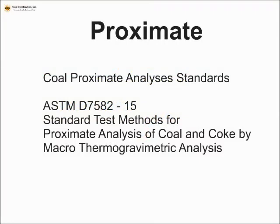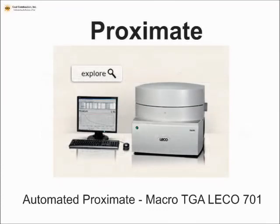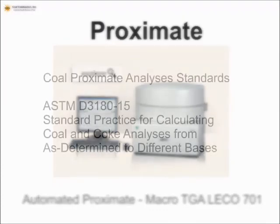In a modern laboratory, we might be using the macrothermogravimetric test. Here's an example of this machine — it will perform the moisture, ash, and volatile tests all on the same sample.